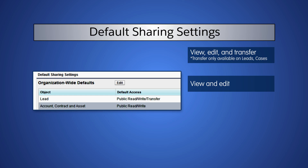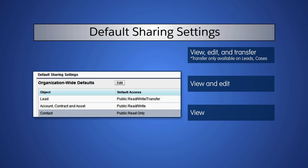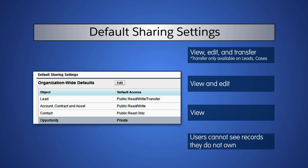Public read-only means users can view all the records of an object, but they cannot edit them or transfer ownership. In this example, users can see contacts they don't own, but they cannot edit or transfer them. The most restrictive setting is private — here, users cannot see opportunities they do not own.